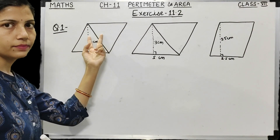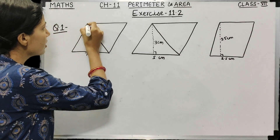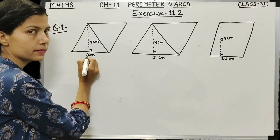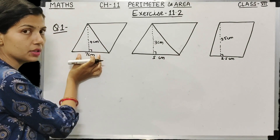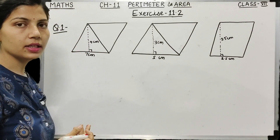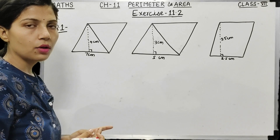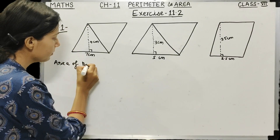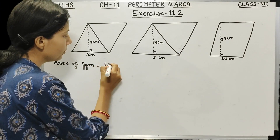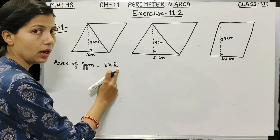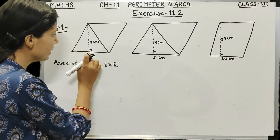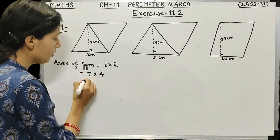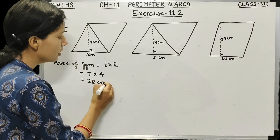This is the height of the parallelogram and the corresponding base. The base is 7 cm and the height is 4 cm. We know the area of a parallelogram is base into height, so 7 × 4 = 28 cm². The area of this parallelogram is 28 cm².